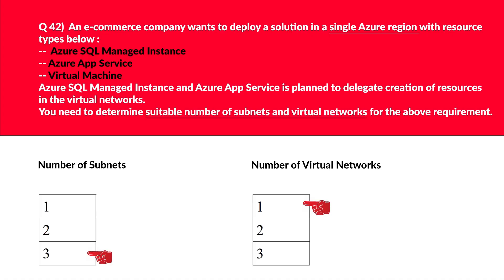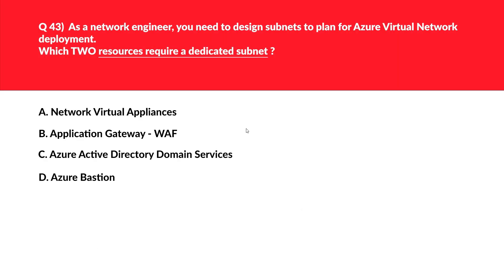Therefore we require different subnets and log those as the correct answer. Let's look at option A, that is network virtual appliances. Network virtual appliances don't need a dedicated subnet, so we can rule that out. Let's look at option B, that is Application Gateway WAF. Application Gateway requires a dedicated subnet for sure — this can be one of the potential answers.